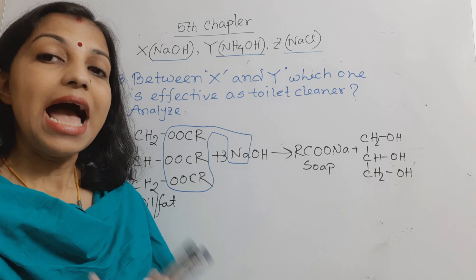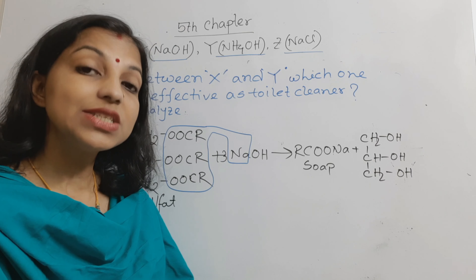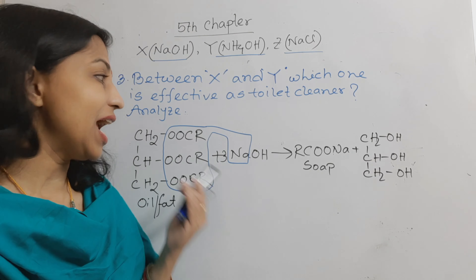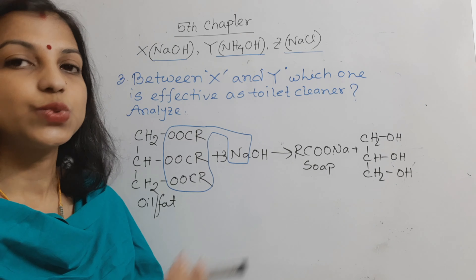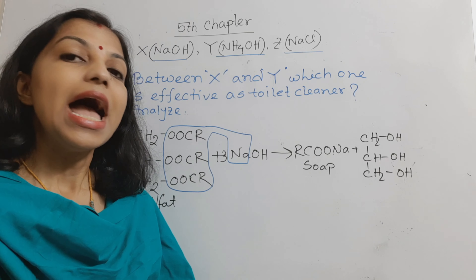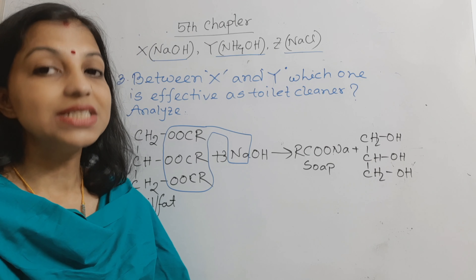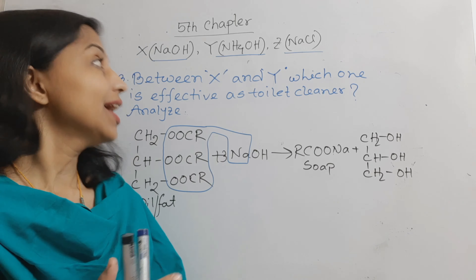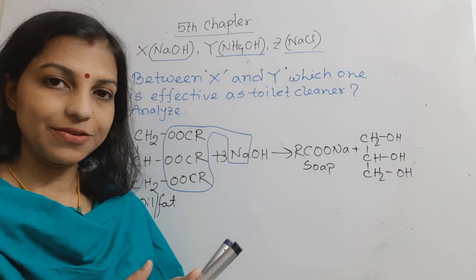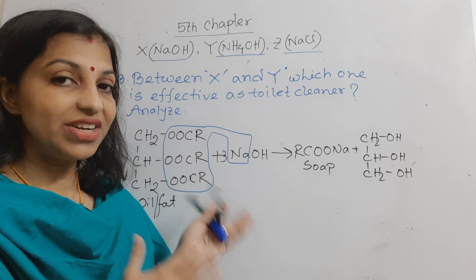But if we use ammonium hydroxide, since it is a weak base, it cannot produce soap or react with oil or fat in the same way. That is why ammonium hydroxide cannot be used as a toilet cleaner. Therefore, between X and Y, X (sodium hydroxide) is effective as toilet cleaner.